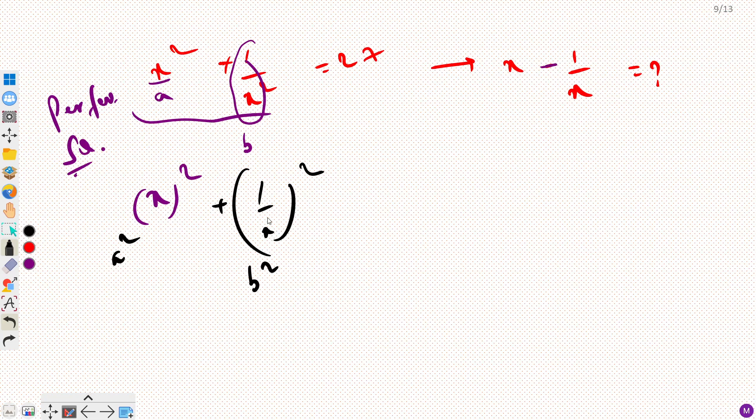Now if I add minus 2ab, so minus 2 into x into 1 by x, then I can make this whole as a minus b whole square. And a is x and b is 1 by x, so this would become x minus 1 by x square. But in order to make this a perfect square we added a minus 2, right?